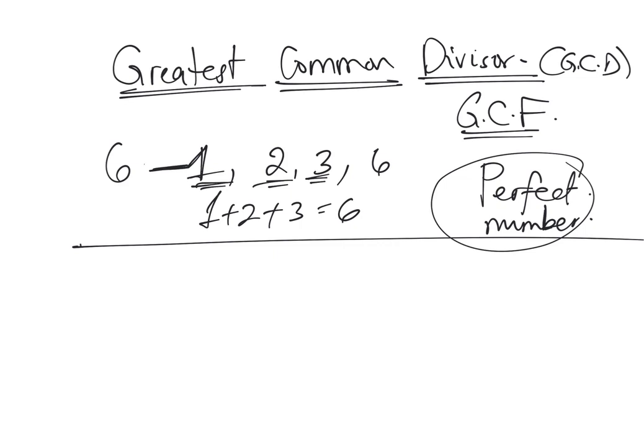When you have a number, you can break it down into its factors or find its prime factorization. For example, the prime factorization of 6 is 2×3. When dealing with fractions, remembering prime factorizations is helpful for finding the lowest common denominator.